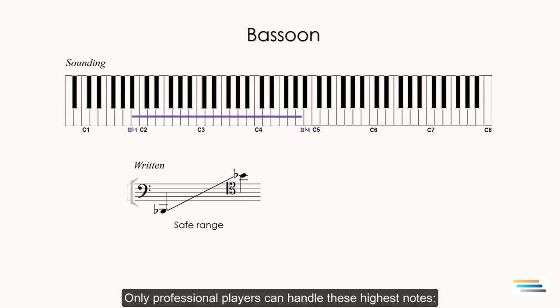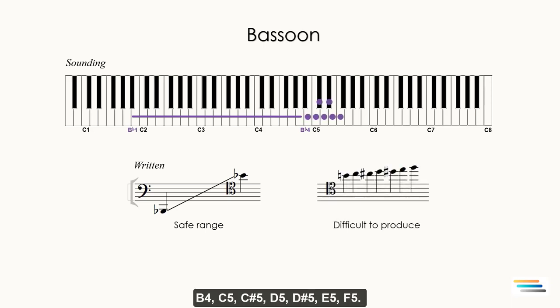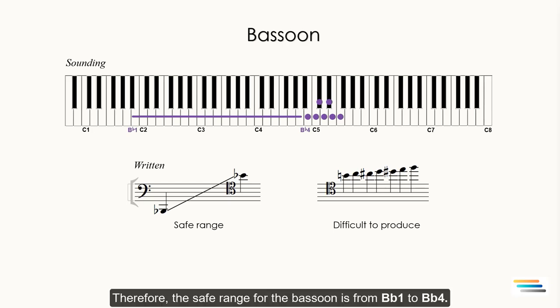Only professional players can handle these highest notes: B4, C5, C♯5, D5, D♯5, E5, F5 and so on. Therefore, the safe range for the bassoon is from B♭1 to B♭4.